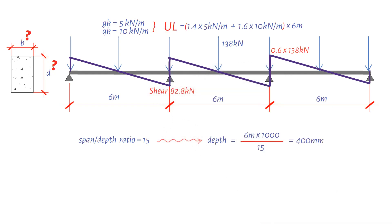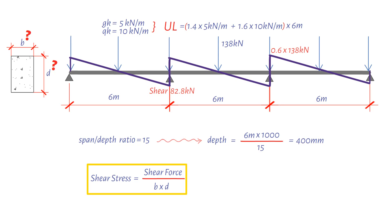We have a little equation that helps us to calculate the design shear stress. The design shear stress is equal to the design shear force divided by the effective depth times the width. Now, if we assume the design shear stress equals 1.2 newtons per square millimeter.